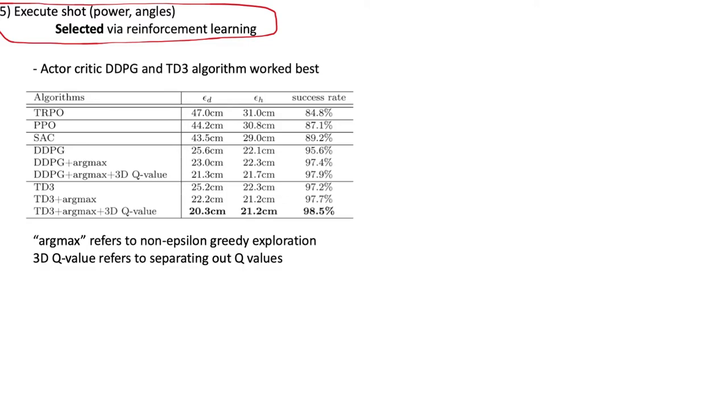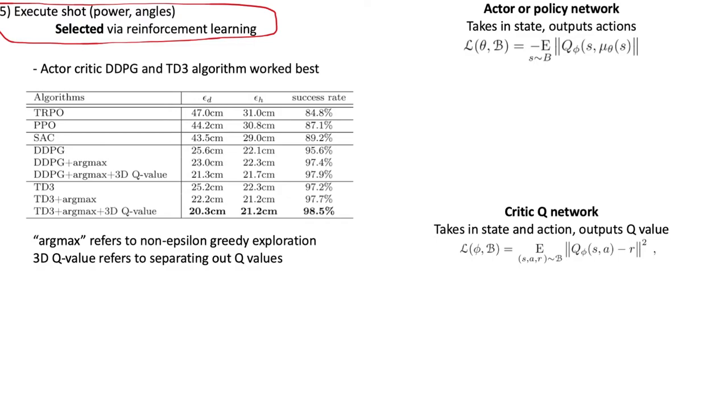DDPG and TD3 are the algorithms they find work best. These algorithms are both very similar to each other. TD3 is just a slight modification or adaption of DDPG. Both are actor-critic methods. They use separate networks for both the actor and the critic. The actor or policy network takes as input the state and directly predicts what actions the agent should do. It actually uses the critic network within its loss function to learn to take better actions in future.